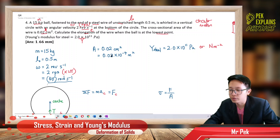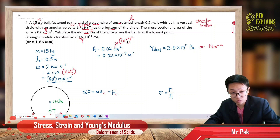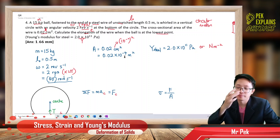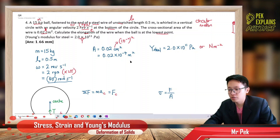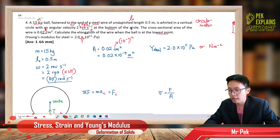To convert the cross-section area from cm² to m²: centi is 10⁻², and under the power of 2, it becomes 10⁻⁴. Many students make this mistake — because the centi prefix is squared, it becomes negative 4, not negative 2. So the area is 0.02×10⁻⁴ m² in SI unit. The Young's modulus is 2×10¹¹ Pascal. Now, I have identified this as a circular motion — a vertical circular motion.